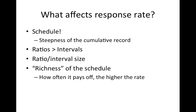The steepness of the cumulative record shows us fast versus slow responding. Schedule affects that. Generally, ratios produce greater or higher responding than intervals, and the ratio or interval size has an important effect as well — what we call the richness of the schedule, how often it pays off. The higher the payoff, the higher the rate, generally speaking, although very rich schedules can slow down responding. For example, an animal responding for food will get full, and then food is no longer a reinforcer.